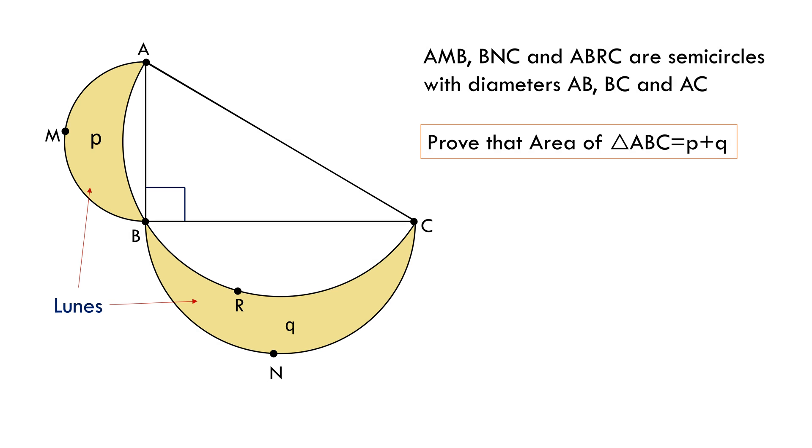As per the question, triangle ABC is a right-angle triangle. Let's utilize the fact that it is a right-angle triangle. Here we need to use the fact that in a right-angle triangle, the area of the semicircle on the hypotenuse is equal to the sum of the areas of the semicircles on its legs.